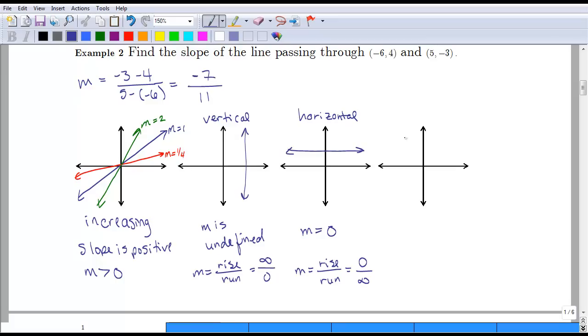Our last case is what happens if this thing is decreasing from left to right. As you may have guessed, this is going to give us a slope that is negative. This might be something like m equals negative 1 if it's at a 45-degree angle. If it's at a shallow angle, then it might be something like m equals negative 1 third. And if it is at a steep angle, then it might be something like m equals negative 2.